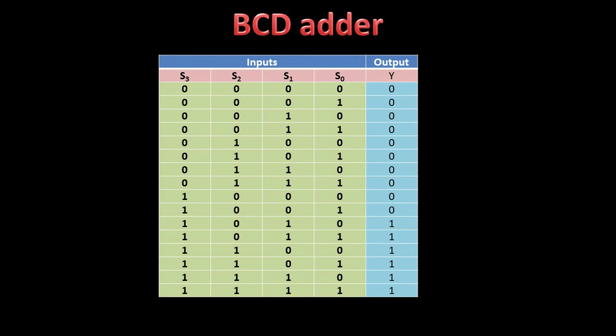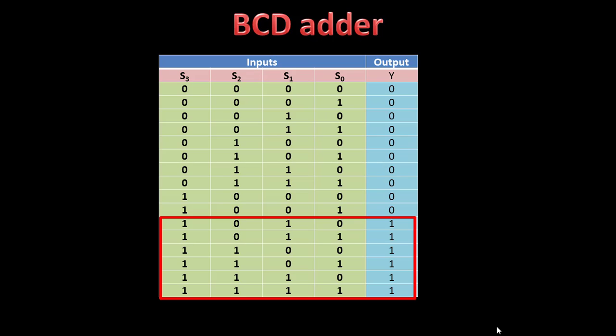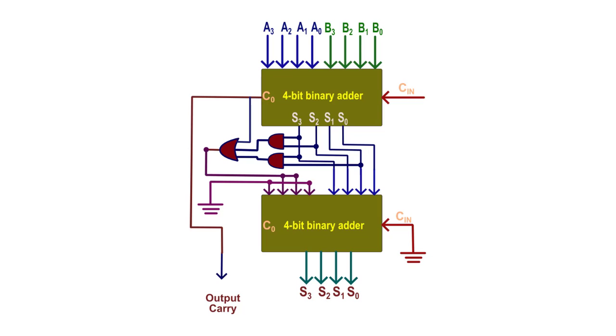To construct the BCD adder, we need some extra logic so that we can handle digits greater than 9 which are invalid. In this truth table, numbers in the red box are all invalid BCD digits. We construct a K-map from the truth table — the blue part has six ones — and from the K-map we derive the logic that automatically adds 0110 whenever an invalid BCD is detected, to produce the valid BCD. This is the actual circuit diagram of the BCD adder.